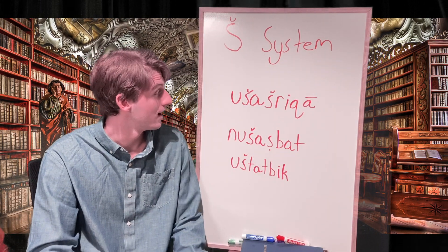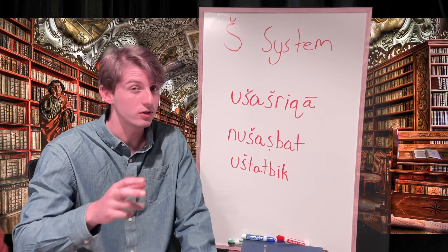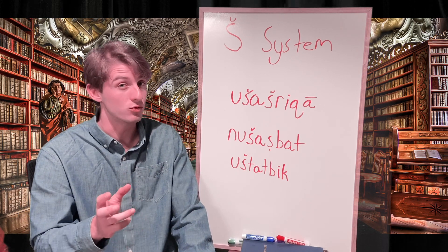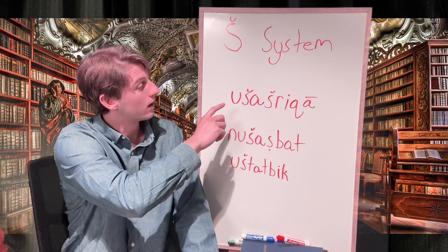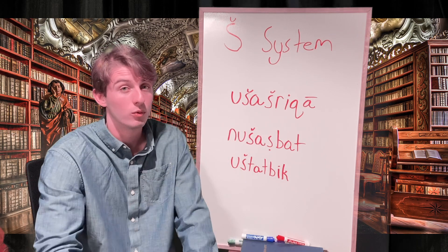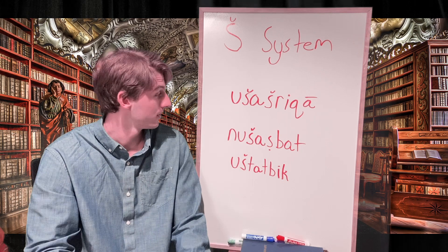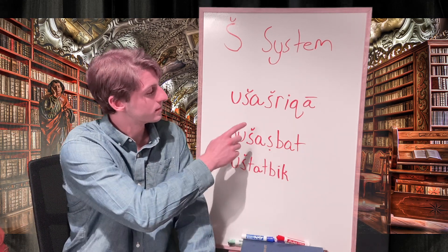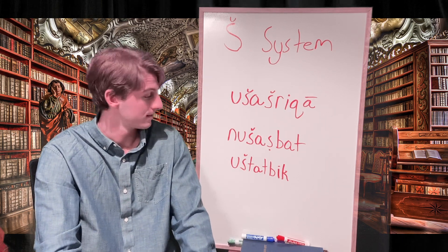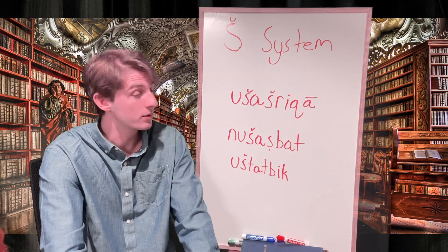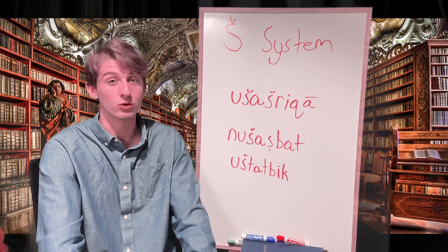Here I have three Sheen system verbs to translate. I'll quickly run through what the roots mean in the G system so you can pause and practice changing them into causative Sheen system meanings. First, ušašrika comes from roots š, r, q — G system infinitive šarāqum, meaning 'to steal.' Second, nušatzbat comes from ṣ, b, t — G system infinitive ṣabātum, 'to seize.' Last, uštatbik comes from t, b, k — G system infinitive tabākum, 'to pour.'